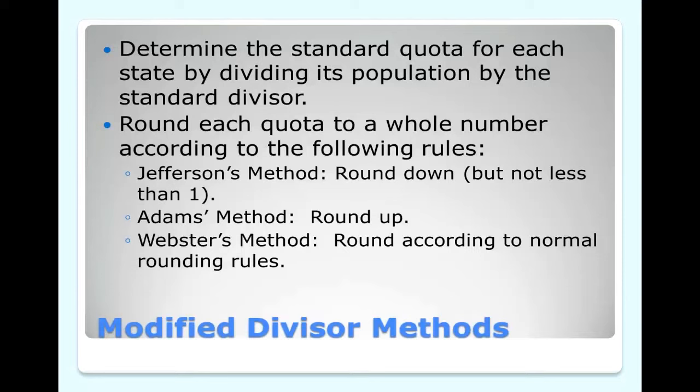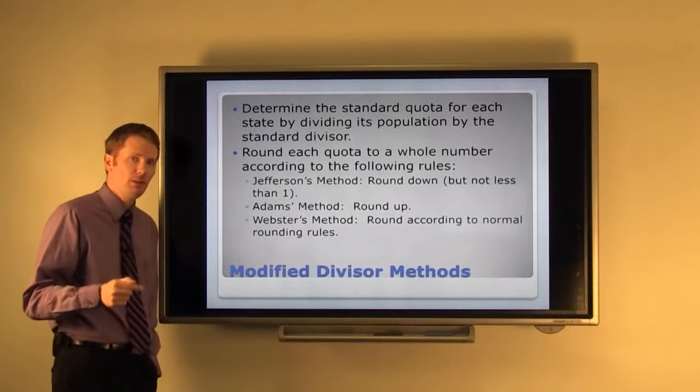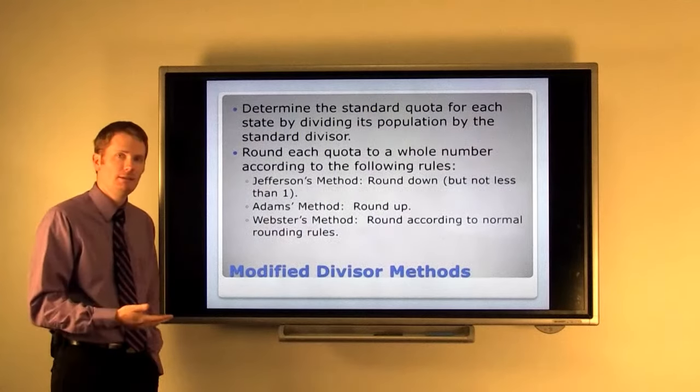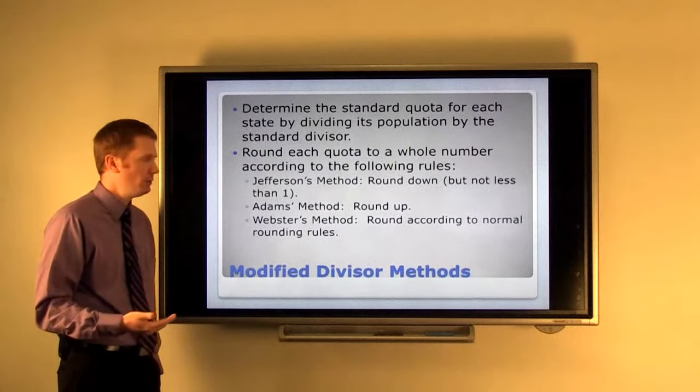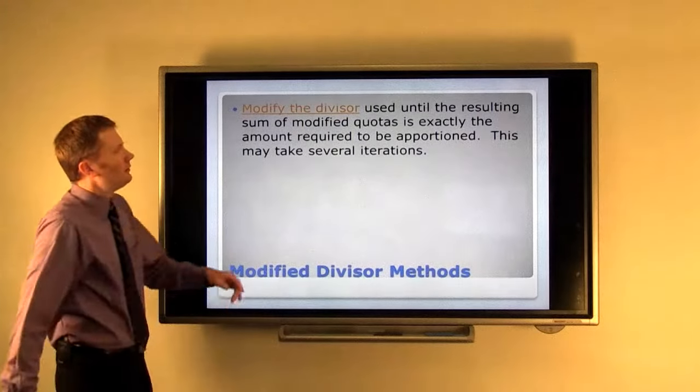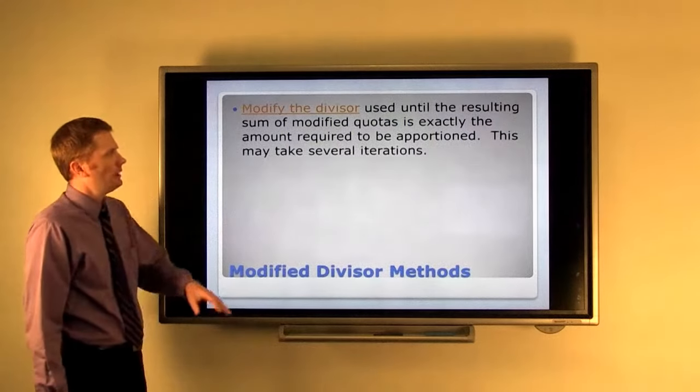If you recall that if you have a .5 or greater decimal you go up to the next integer. If it's .49999 or less it goes down. And so at this point you may be wondering well how is Jefferson's method any different than Alexander Hamilton's method. Well the key with Jefferson's method is that when you round down it has to add up to the perfect number of items that you want to apportion. In our case of the 1820 census that was 213.